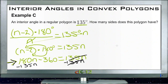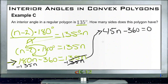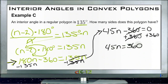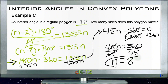180 minus 135 is 45, so we get 45n minus 360 equals 0. Adding 360 to both sides gives 45n equals 360. Dividing both sides by 45, n equals 8. So the polygon has 8 sides when each interior angle is 135 degrees and all angles are equal.